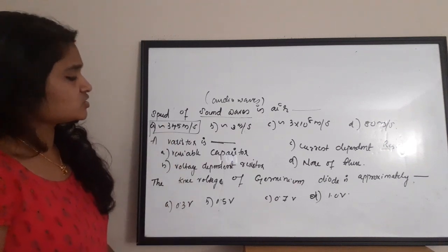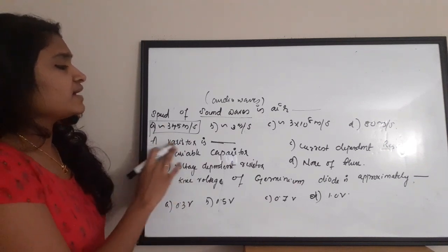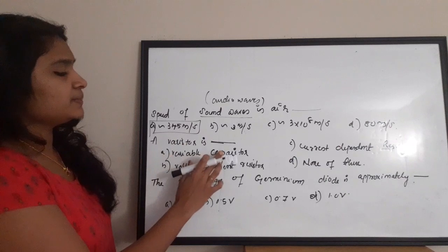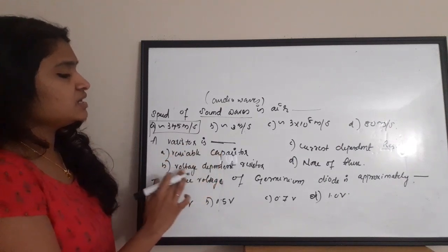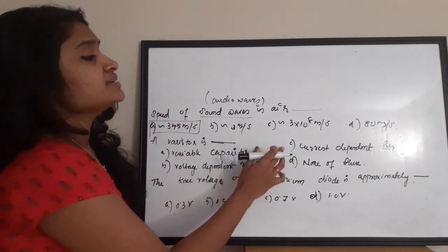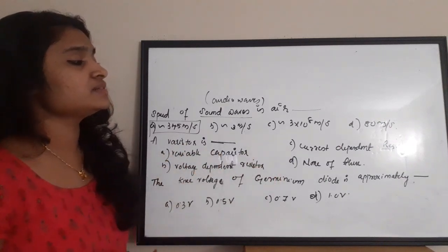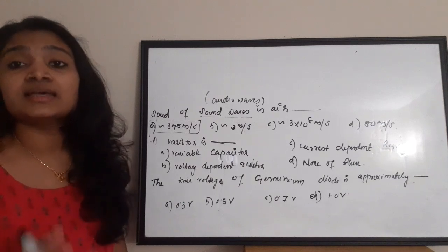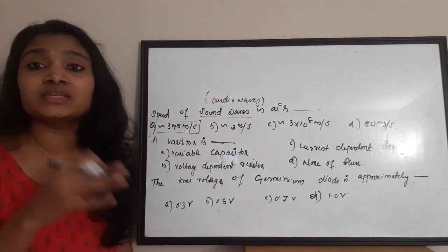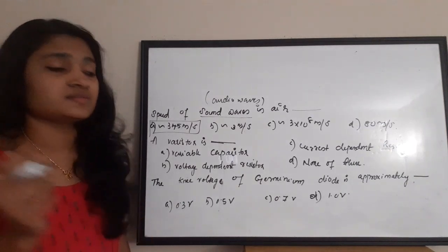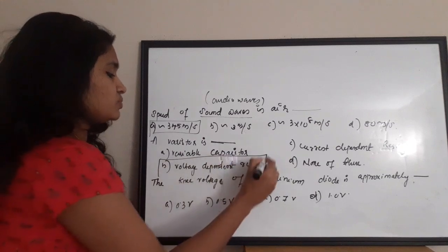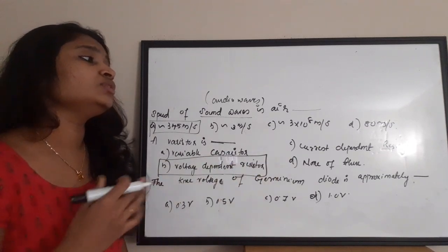Next question: a varistor is — A) a variable capacitor, B) a voltage dependent resistor, C) a current dependent resistor, D) none of these. The correct answer is that a varistor is a voltage dependent resistor, so the correct answer is option B.